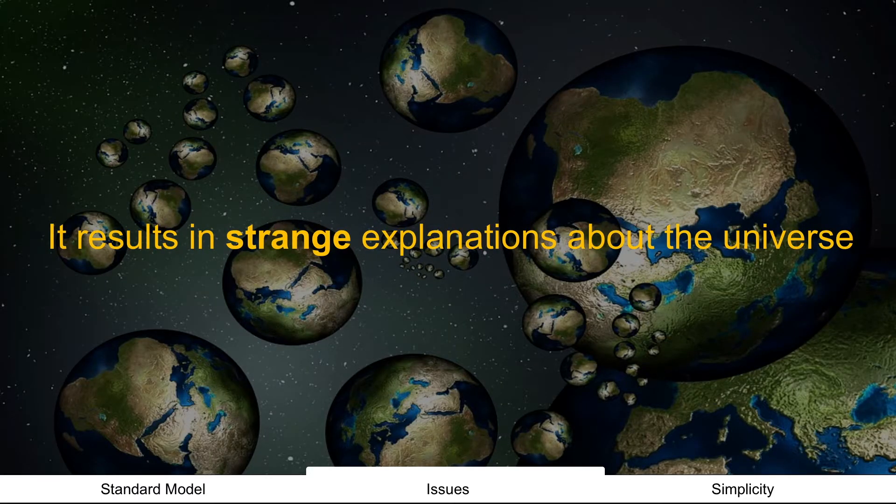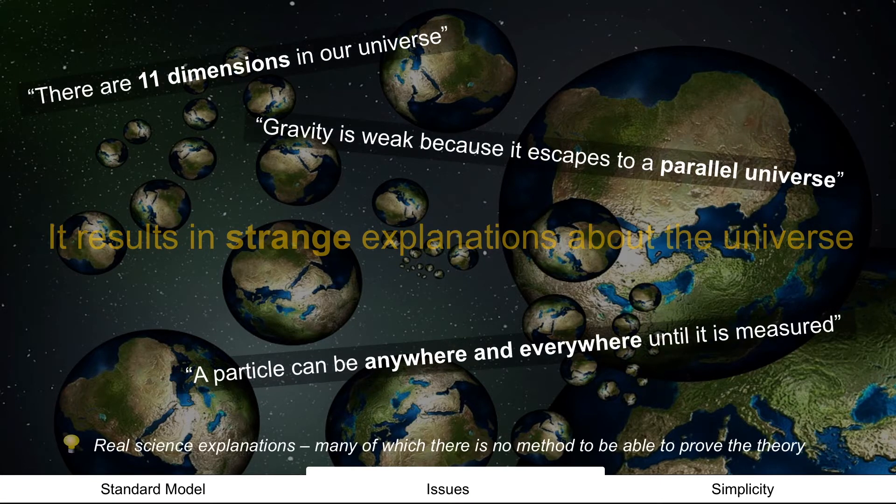But more importantly, as you get kind of deep into that math, it results in strange explanations about the universe because this is what the average person wants to know. What's the world that we're living in? And we end up with explanations like this as a result of that math. Oh, there's 11 dimensions. Or gravity's weak because it escapes to a parallel universe. Or a particle can be anywhere and everywhere until the point that it's measured. Well, the problem with these explanations is that there's really no way to prove it. How are you going to prove a parallel universe? So we get stuck with these answers that people don't understand the math, we just have to believe them.